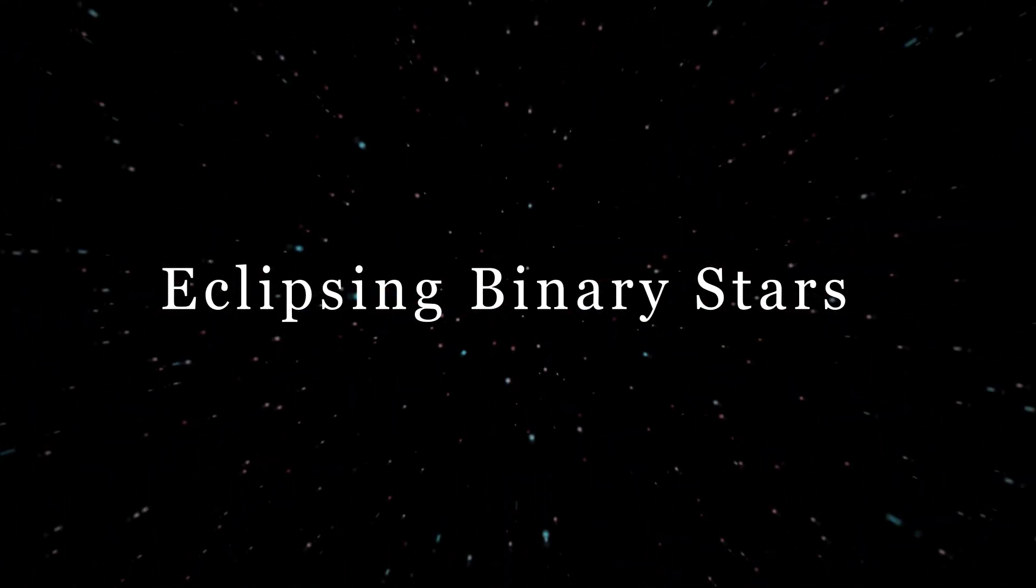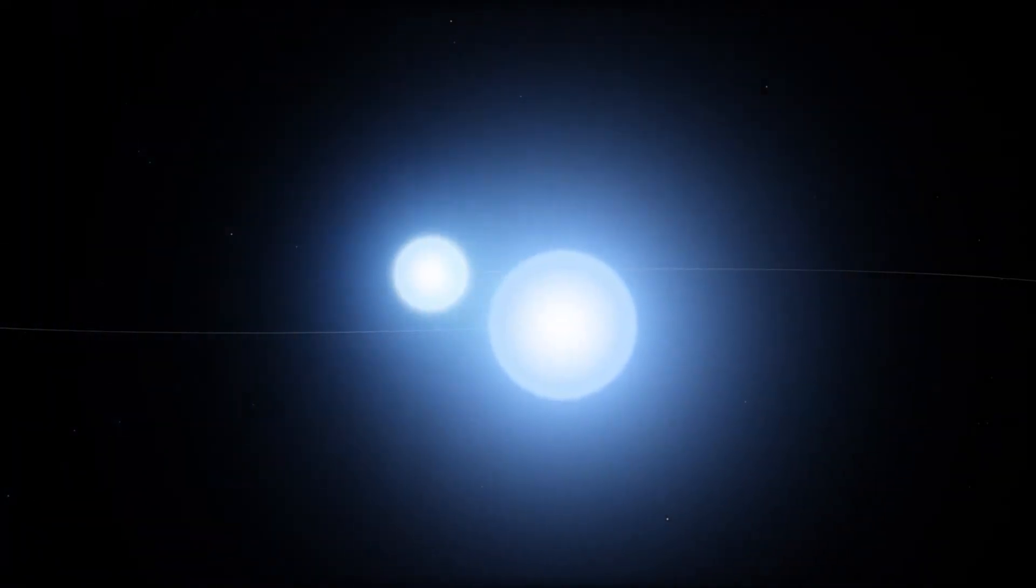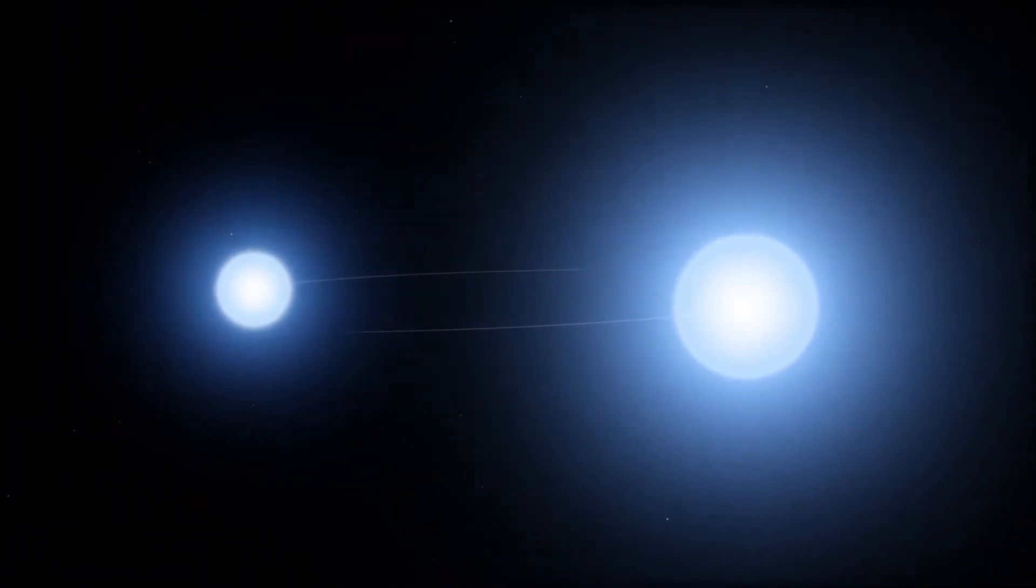This video will focus on eclipsing binary stars. These are star systems whose orbital plane is aligned with our viewpoint, so that when eclipses occur, there is a dimming of the amount of light that we receive.